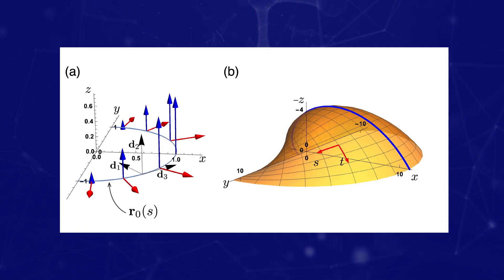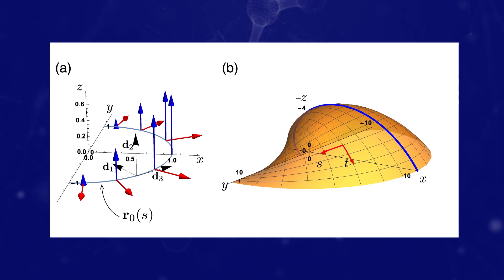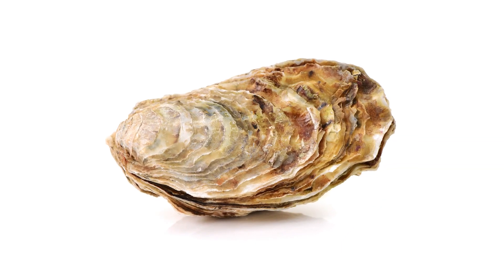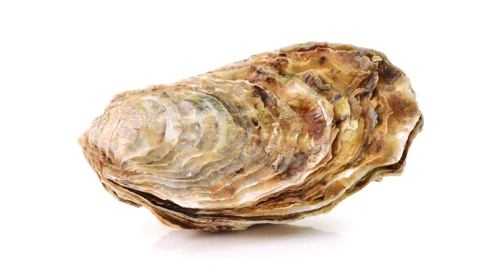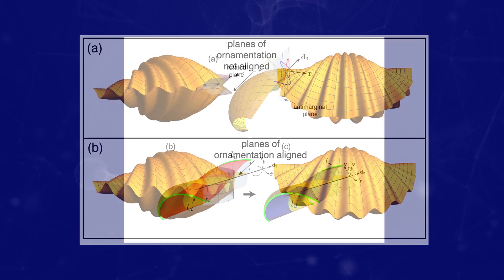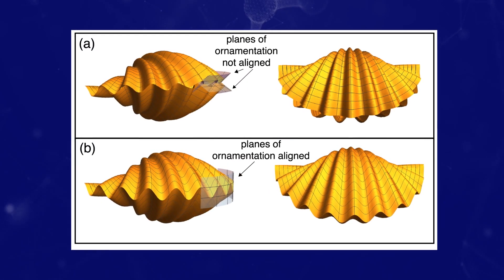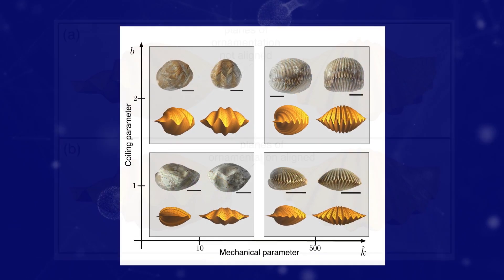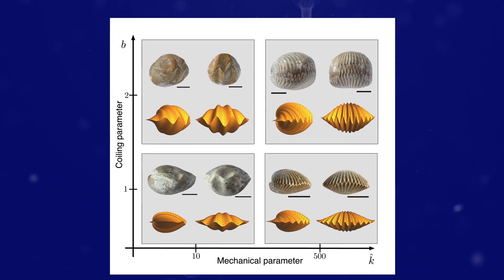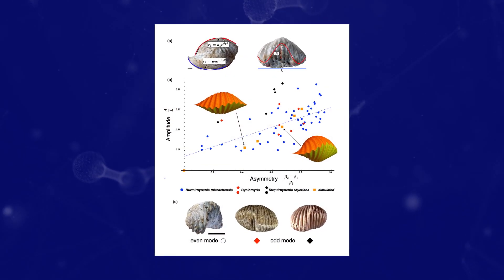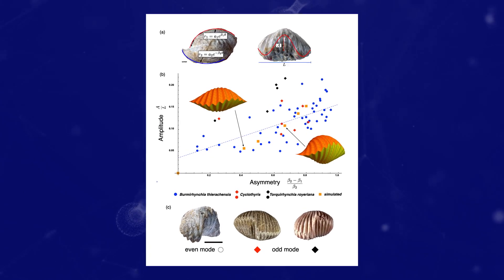What we did was construct a mathematical model built around the process by which the shell is secreted by the animal living inside, one layer at a time. Looking closely at the geometry of that shell growth process, we uncovered the physical mechanism by which interlocking occurs, and therefore we can now perceive interlocking as a predictable outcome of the physics of the growth process.